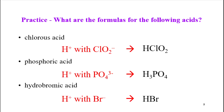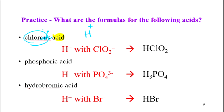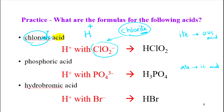Now I'm going to ask you to write the formula for these names. Chlorous acid: this is an acid, so I write H at the beginning. 'Chlorous' — the suffix is '-ous', which means the polyatomic ion ended in '-ite'. So we had chlorite, ClO2 one-negative. Combine H one-positive with ClO2 one-negative: the formula is HClO2.